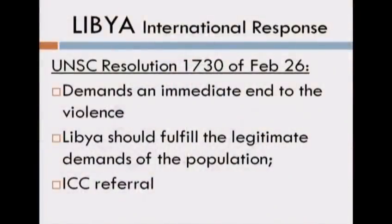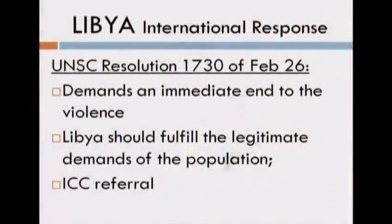Now international response. Resolution 1730 of February 26 demands an immediate end of the violence. This is a Security Council resolution — five permanent members, the winners of World War II: United States, Great Britain, Russia (formerly Soviet Union), China (now People's Republic), and France. They have veto power. There's also a General Assembly where it's one country, one vote — 194 of them. Resolutions in the General Assembly are not binding; resolutions in the Security Council are binding, but only if strong states want to enforce them.